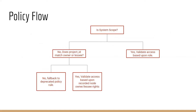Here's how the policy flow gets validated: if the request is system-scoped, access is validated based on role — no additional database lookups, clean and efficient. If it's not system-scoped, the project ID is matched; basically it checks if an owner is matched, which may require additional database lookups or joins. If that doesn't match, the logic falls back to the deprecated role until they're disabled. If it does match, the user can access resources based on the node relationship.